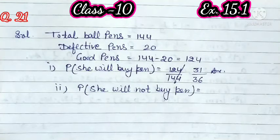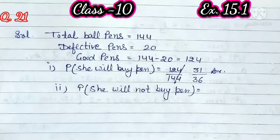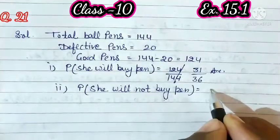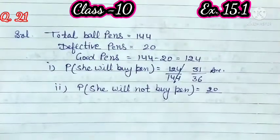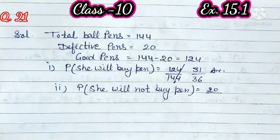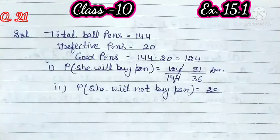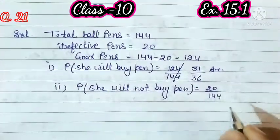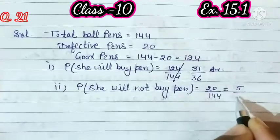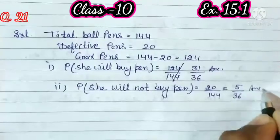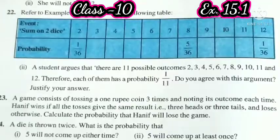Second part: probability she will not buy pen — she will not buy a defective pen. So we find the probability of defective pens. Defective pens = 20, upon total pens = 144. Simplifying this gives the probability. Next question.